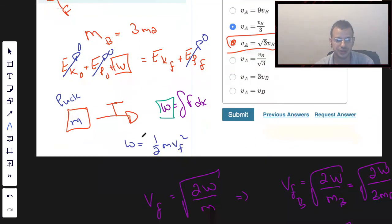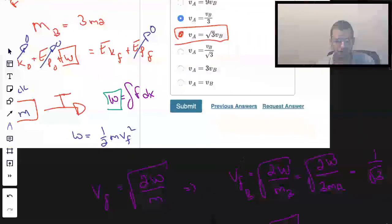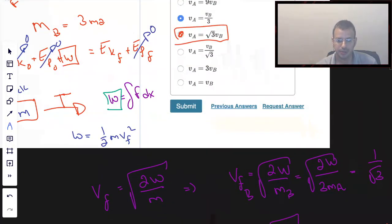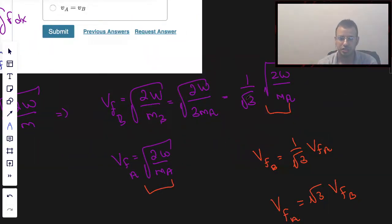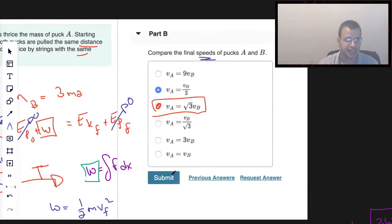We then wrote that out for both pucks, V final B, V final A, after we solved for velocity final. And after doing some math and rearranging, we found we were able to write V final B in terms of V final A. We find that V final A is square root of 3 times the velocity final of B. And that's what we chose for the answer.